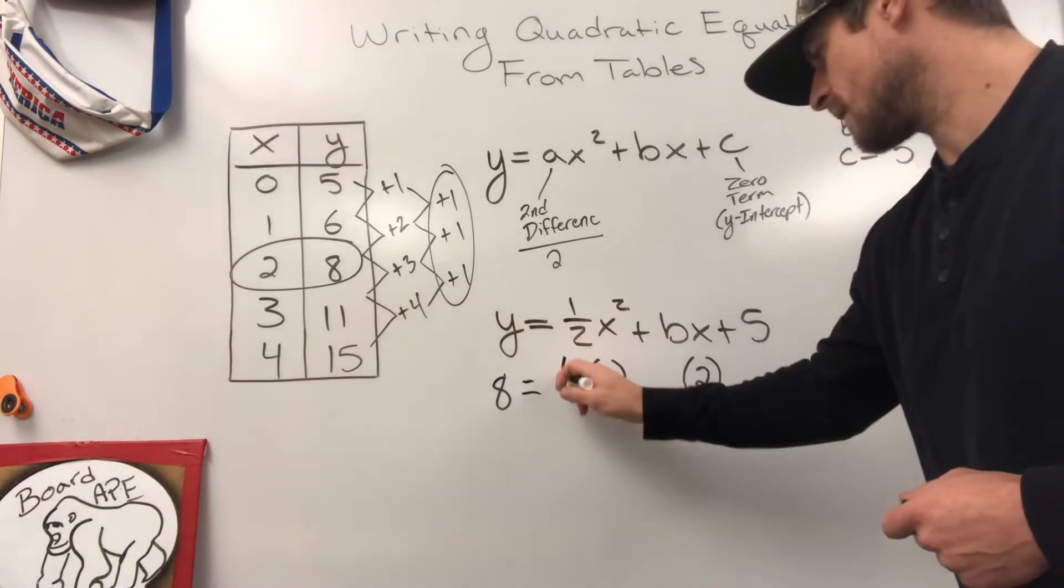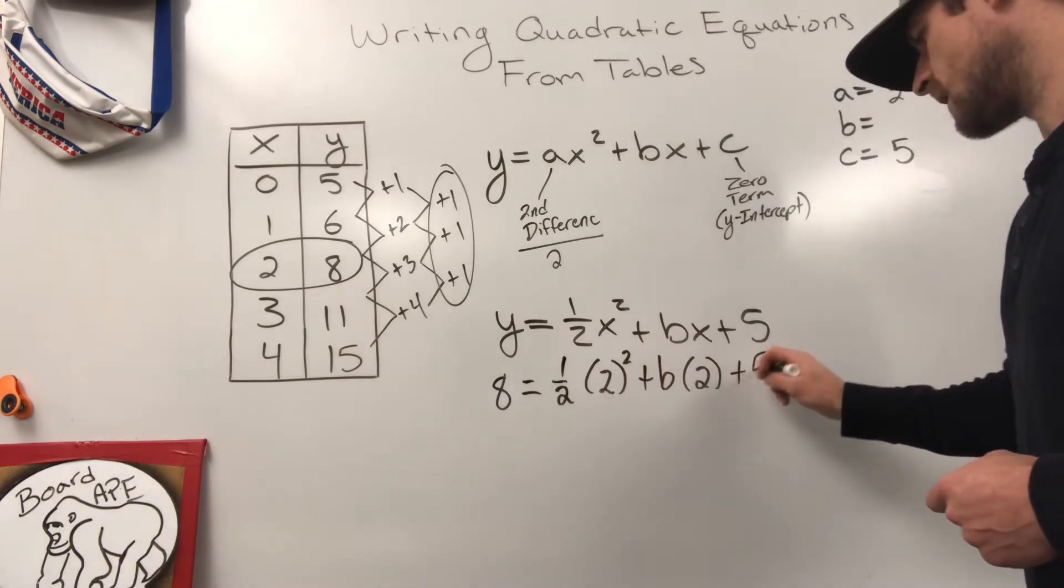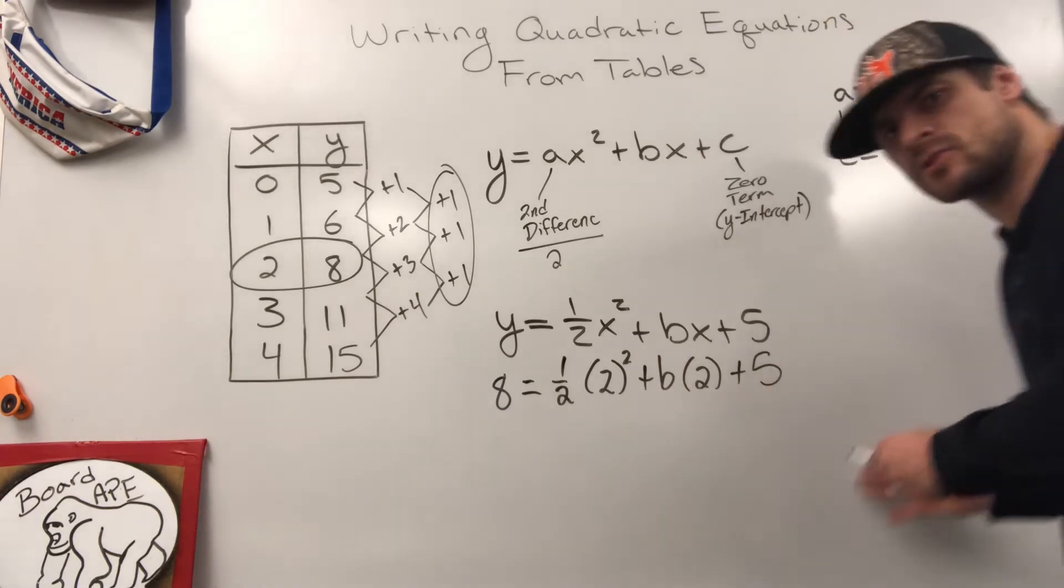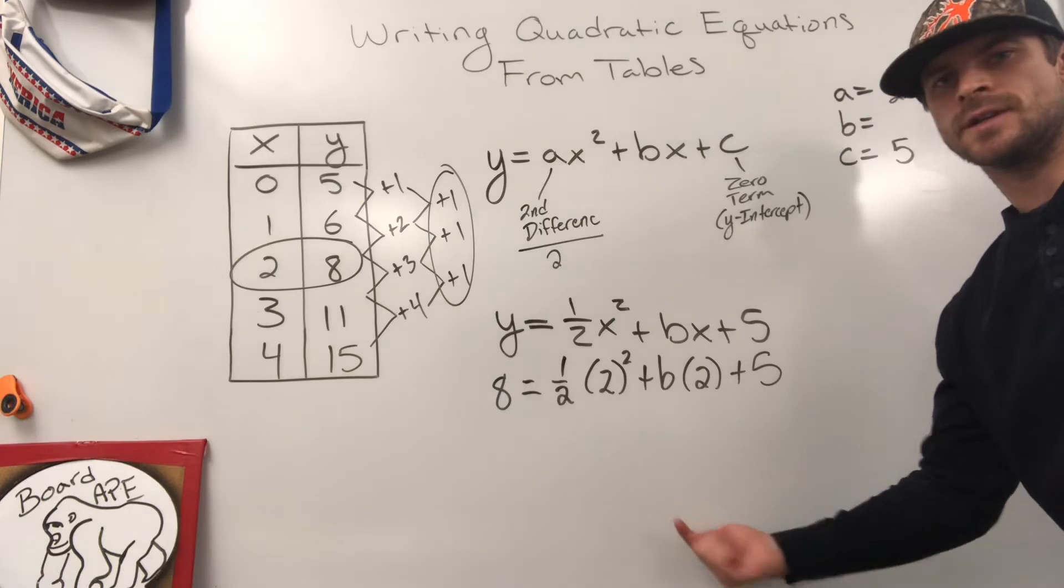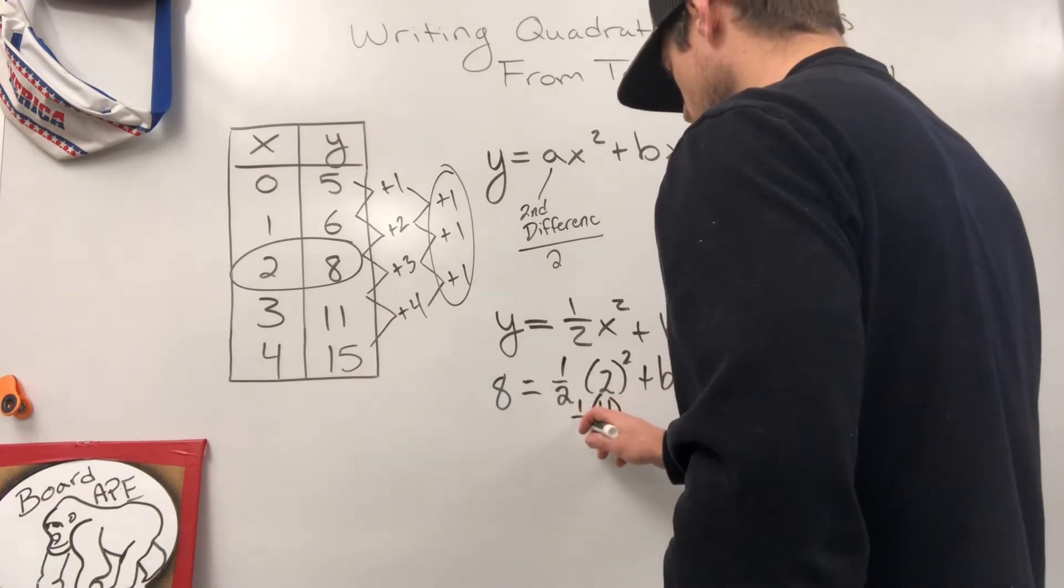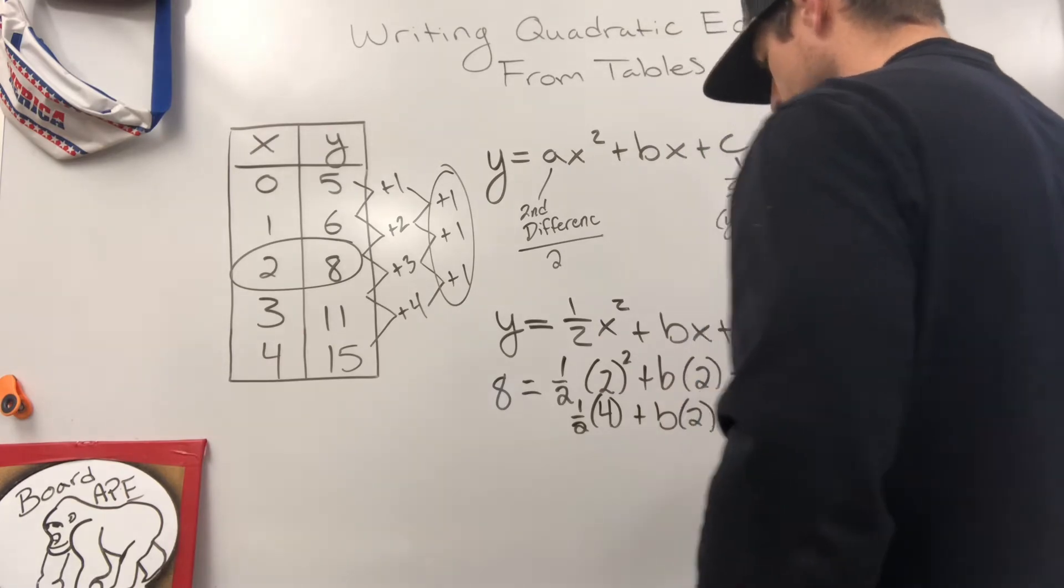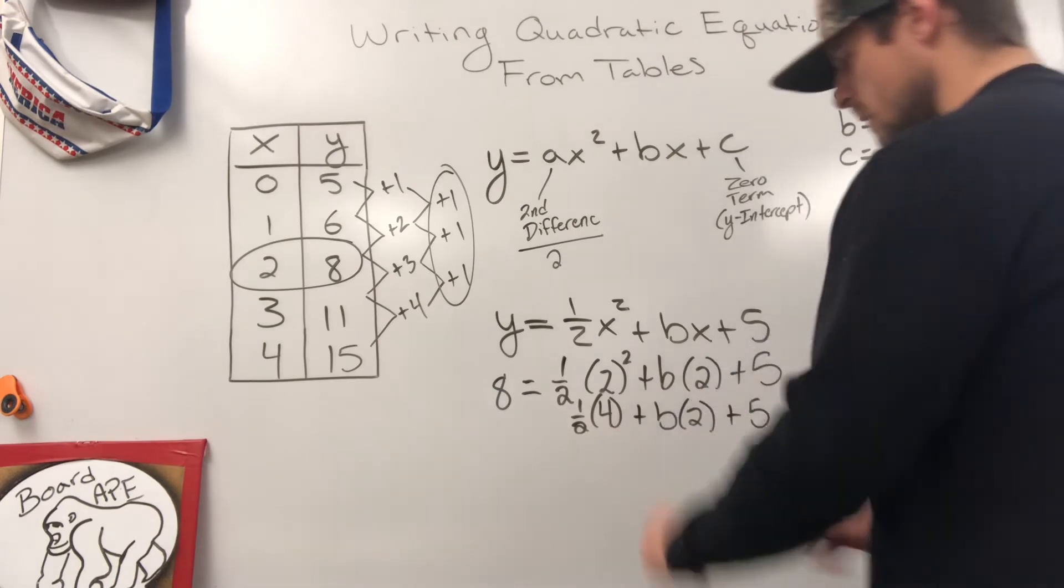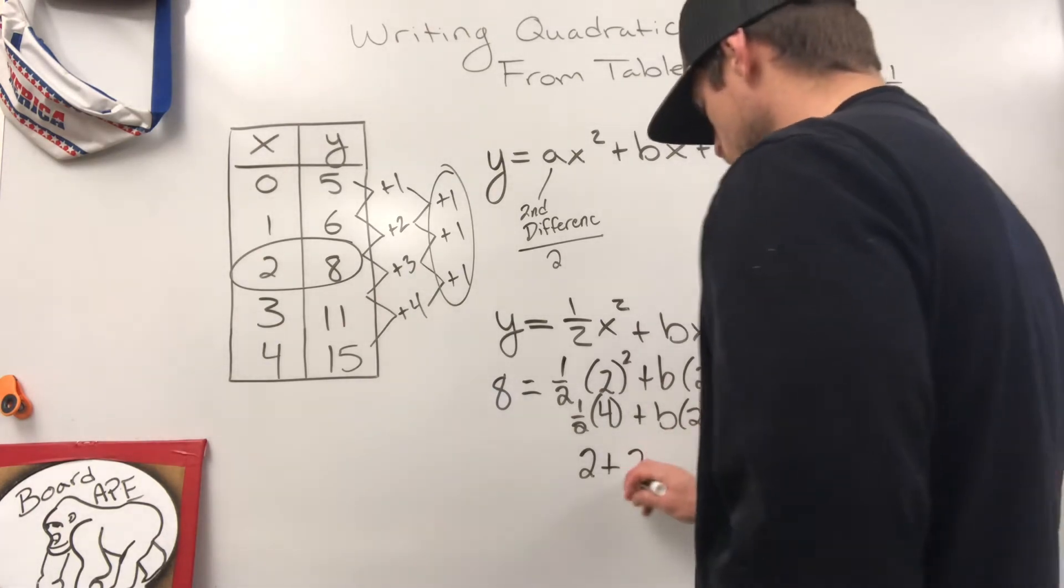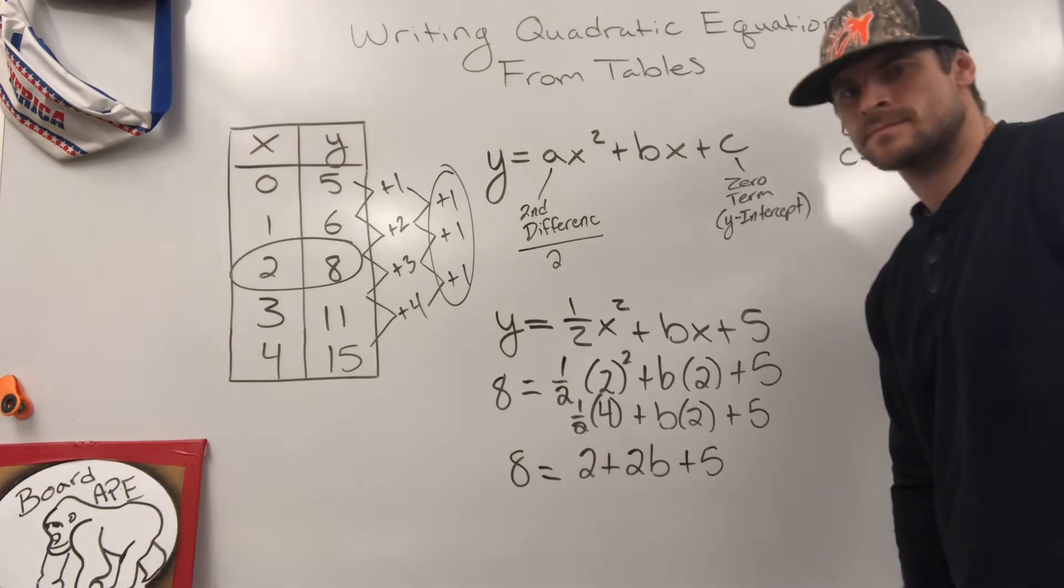Bring everything else straight down, one half, square it, B, and plus five. So now what we have is we have an equation that we can simplify on the right side, and then inverse operate everything over to the left, so that B is isolated over here. Let's start doing it. Two squared is four. Four times one half plus B times two plus five. Half of four is two plus, I'm just going to put that two in front as a coefficient, two B plus five, and remember it's equal to eight.